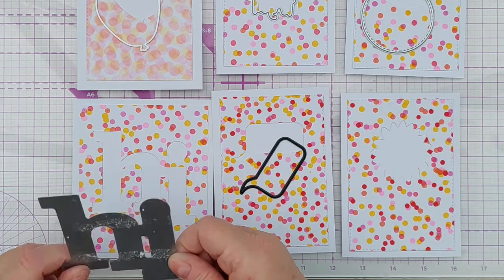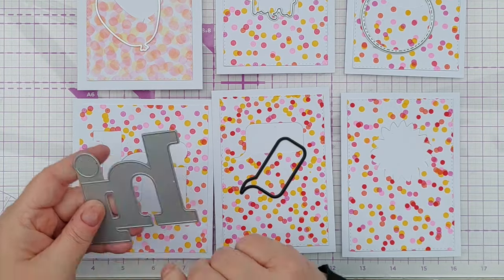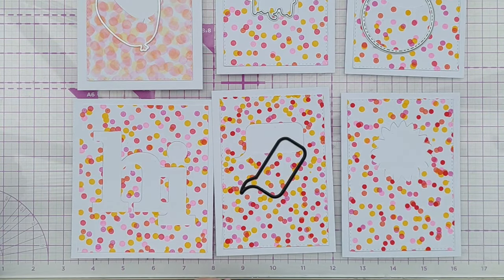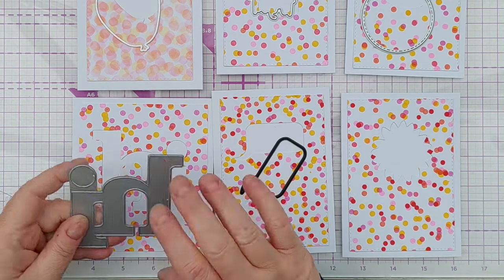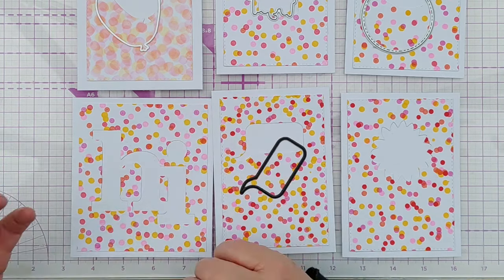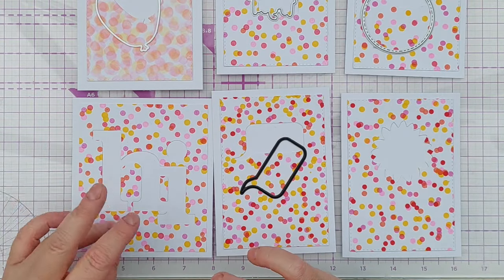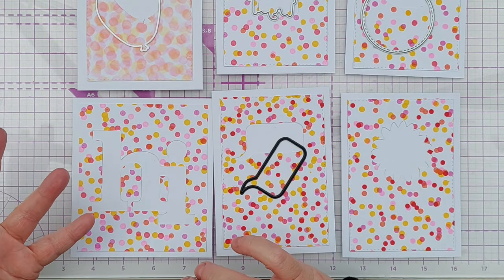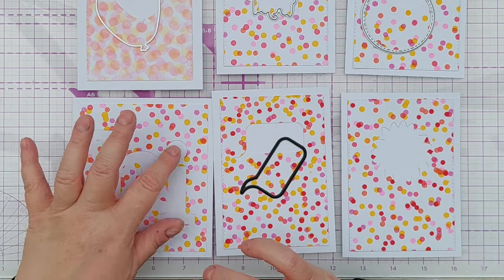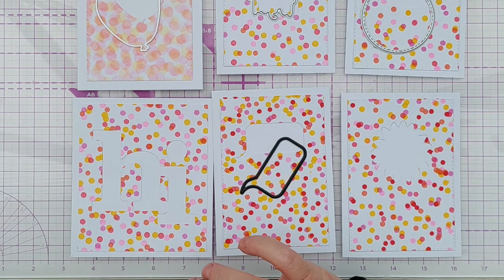I used this high die for this. I'm not entirely sure what I would stamp in here because the high is the word. So I might actually inlay something in there, maybe gold cardstock, so that it looks a bit more finished.